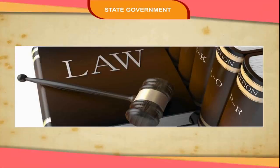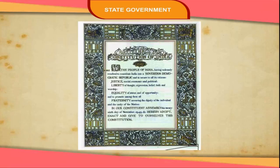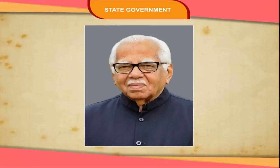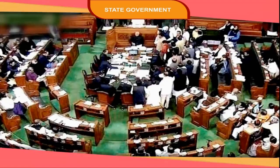The state legislature makes laws on the subjects mentioned in the state list and concurrent list. Our constitution provides for a maximum of 500 members and a minimum of 60 members in a Legislative Assembly. The Governor of the state can nominate one member of the Anglo-Indian community if it has not been represented in the Legislative Assembly. The number of members in the Assembly is fixed by Parliament in proportion to the population of the state concerned. The members of the Vidhan Sabha are elected directly by the people of the state.